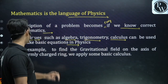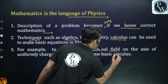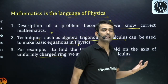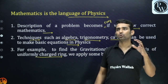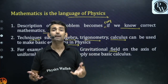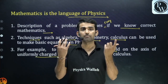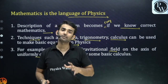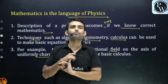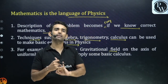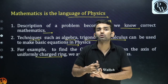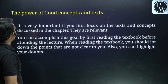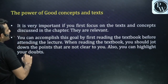Mathematics is very very important. For example, if you want to find the gravitational field on the axis of a uniformly charged ring, you apply basic calculus — you take a small element, integrate it, and some trigonometry is also used. So you should be well versed with all these things. The first step towards solving numericals is to be well versed with basic mathematics.